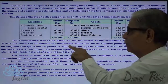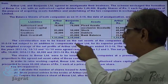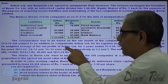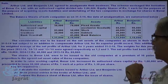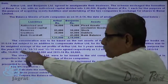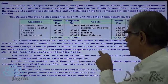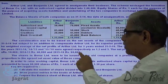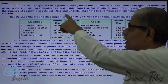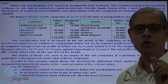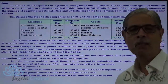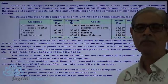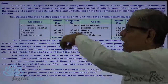Subject to an addition to compensate Arthur Ltd. for its superior profit record, this addition was to be the weighted average of net profit of Arthur Ltd. for 3 years ended 31-3-2016. The weights for years 13-14, 14-15, and 15-16 are 1, 2, and 3. The net profits for the 3 years are 10,000, 40,000, and 60,000. So Arthur Ltd. is to be paid not only net assets but somewhat more because of additional profit, which may be titled as goodwill.